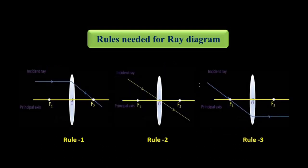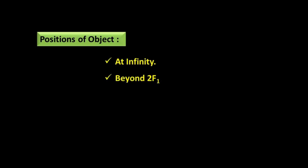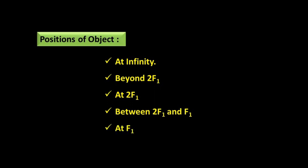So these are the three rules. The positions of the object at different places are: object at infinity, object beyond 2F1, object at 2F1, object between 2F1 and F1, object at F1, and object between F1 and O — that is, between the focus and optical center.